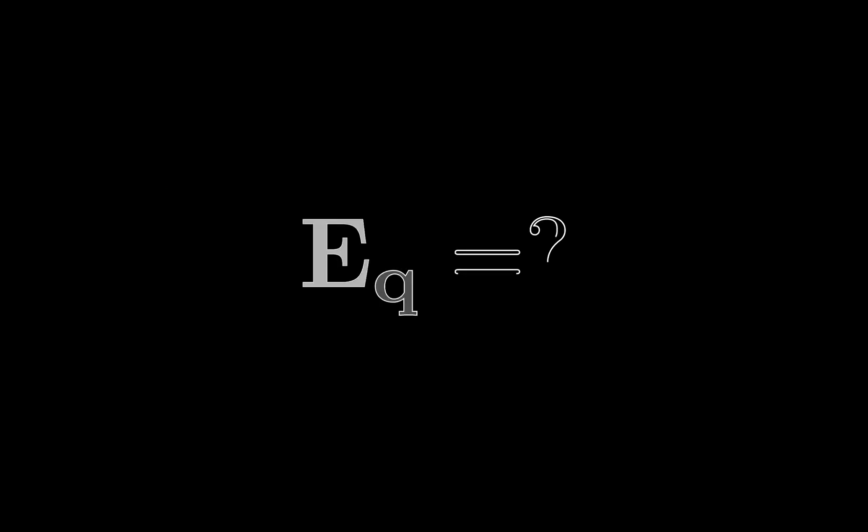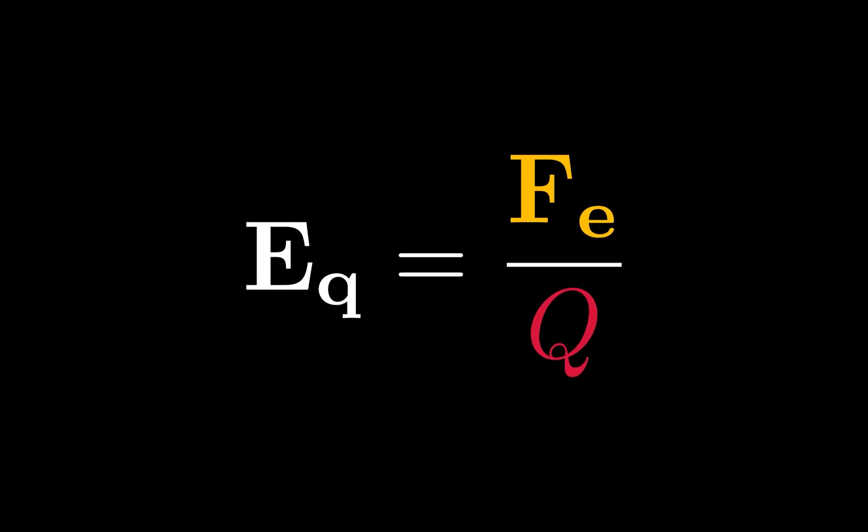Let's say that we want to find the field generated by the charged particle little q. We can mathematically define field as the ratio of force to charge. So the field generated by little q is the force that some other charged particle, for example big Q, would experience divided by the charge of big Q.